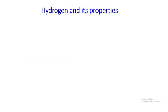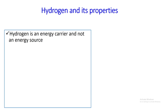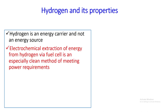Let us learn about hydrogen and its properties first. Hydrogen is an energy carrier and not an energy source, as we have to derive hydrogen from other sources. The electrochemical extraction of energy from hydrogen via fuel cell is an especially clean method of meeting power requirements.